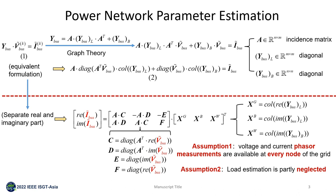Note that there are two assumptions in this model. The first one is that voltage and current phasor measurements are available at every node of the power network system. The second one is that the node impedance is assumed to be only with the imaginary part.